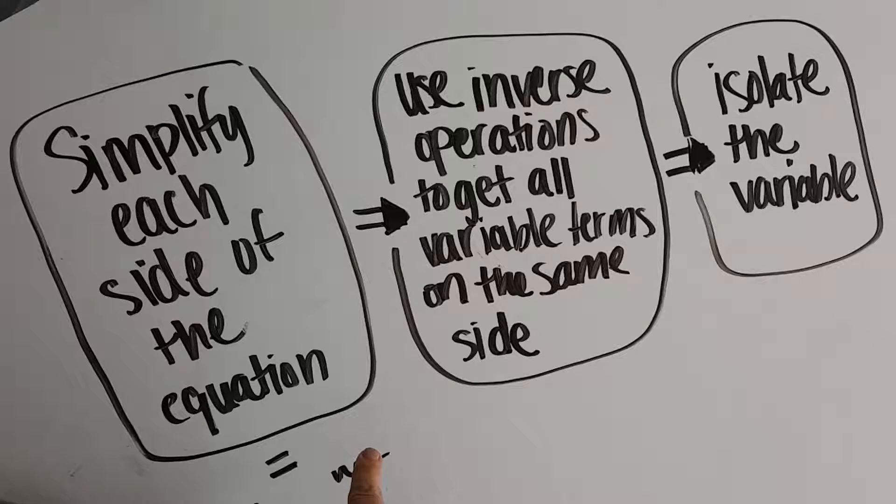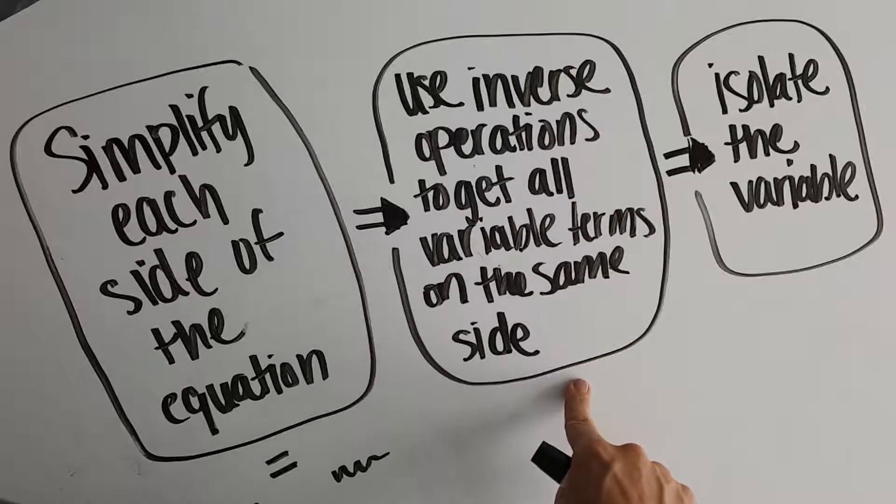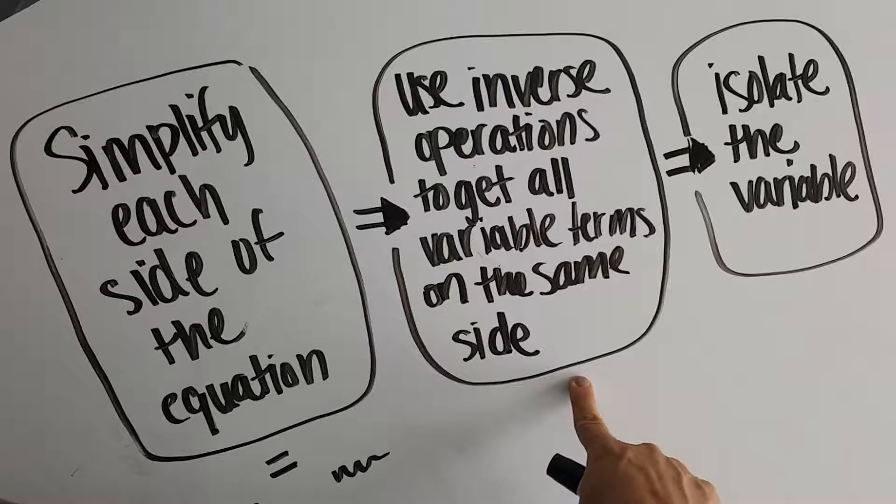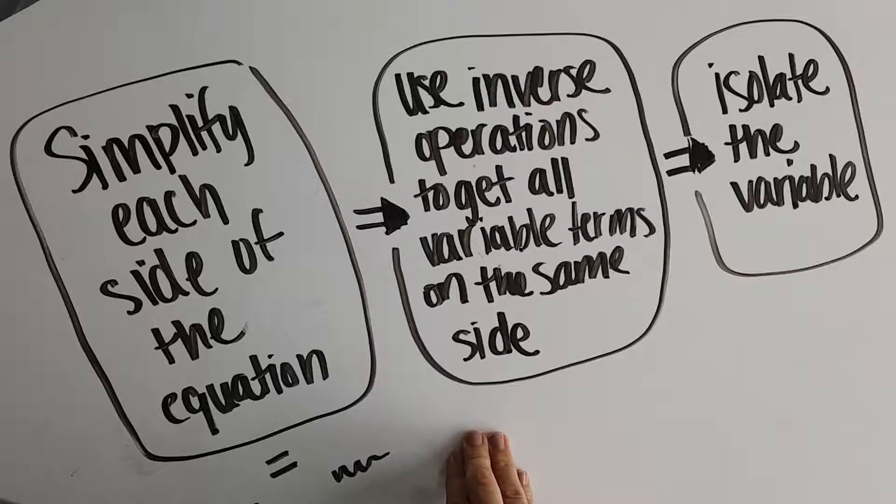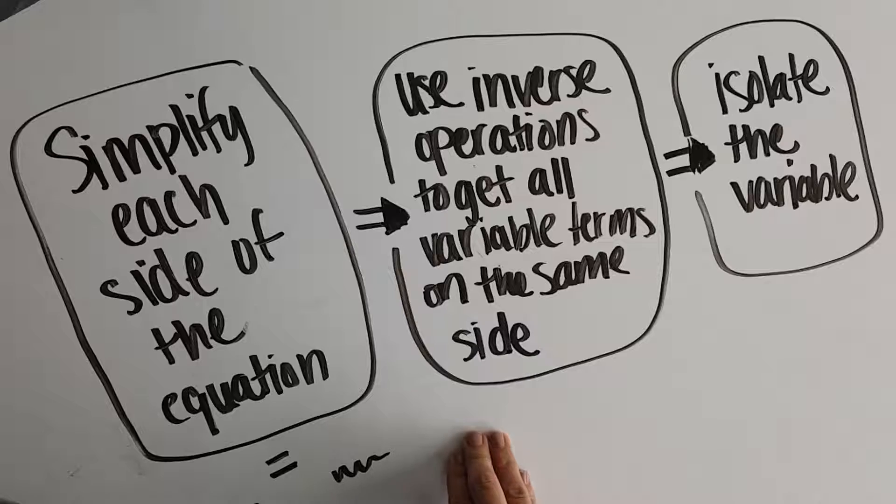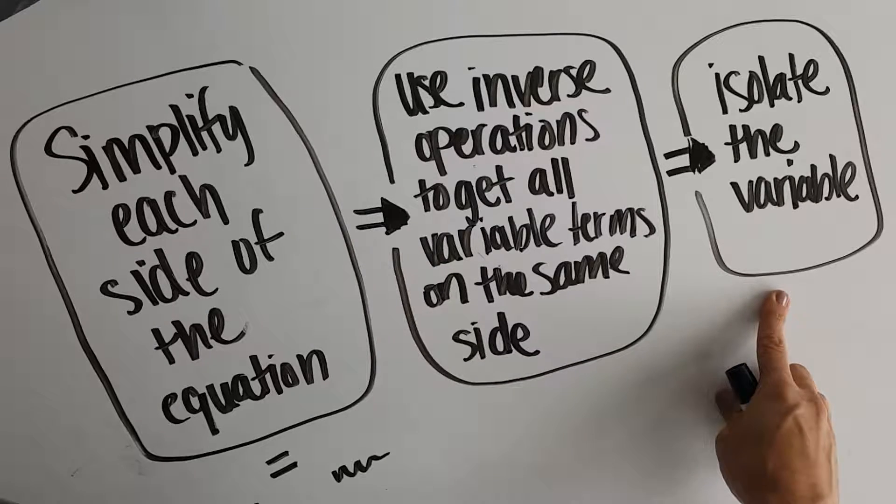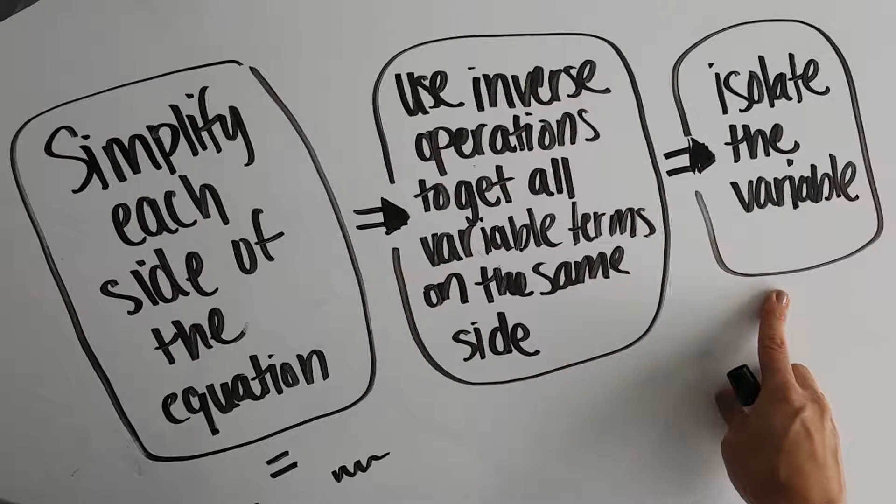So we might distribute, combine like terms, things like that. Once we're all simplified, then we use inverse operations to get all variable terms on the same side. So we want to collect all our x's on one side or the other. It doesn't actually matter. And then our last step is to just solve like we've been solving and isolate our variable. So let's see some examples.